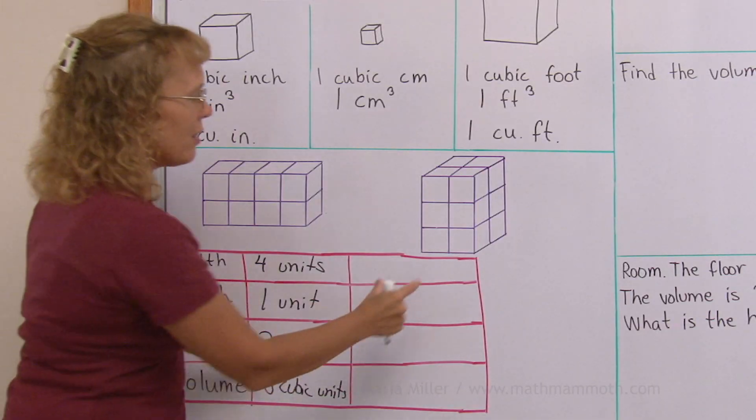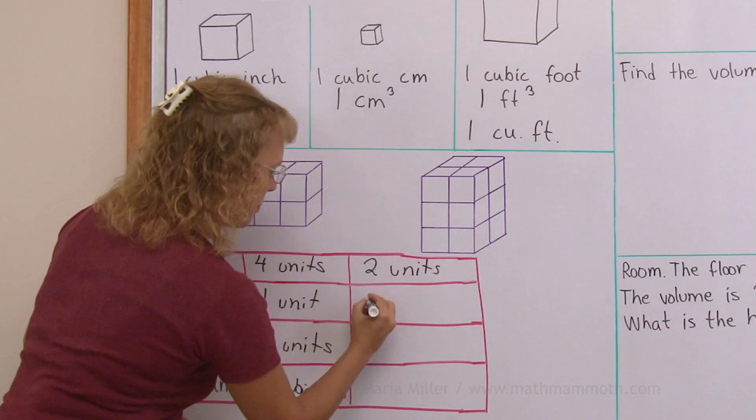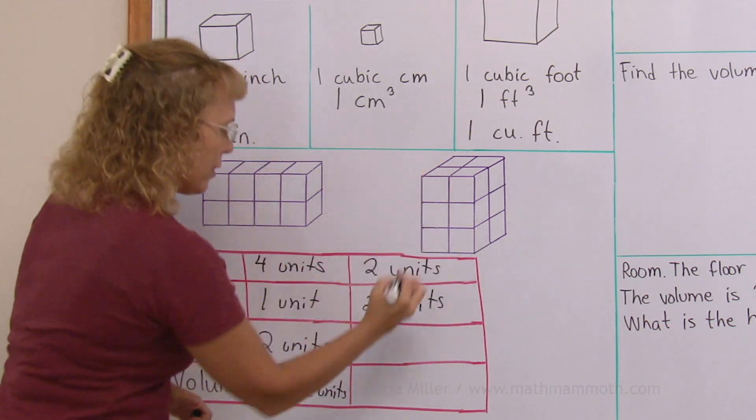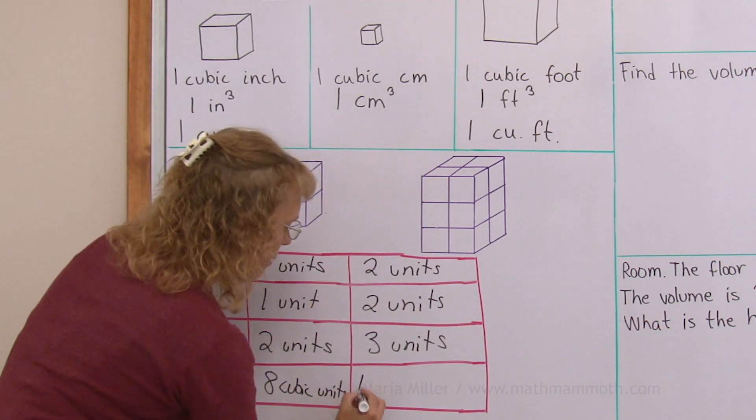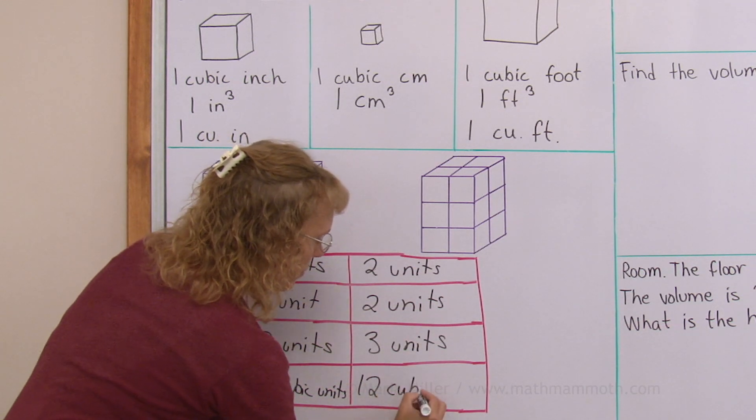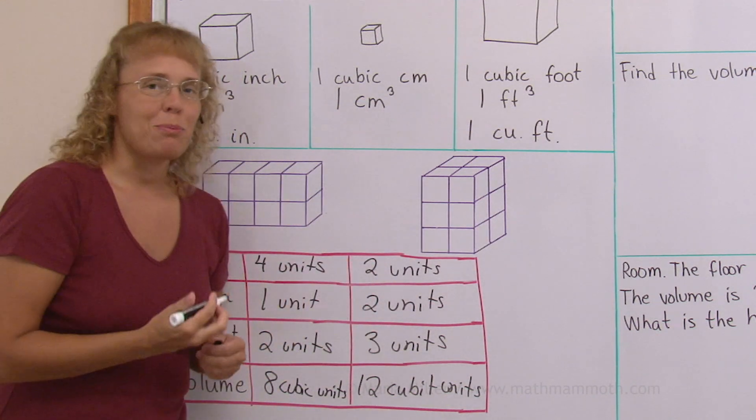The width here is two units. Then the depth is two also, two units. And the height is three units. You can multiply these and get 12 cubic units. 12 cubic units. 12 little cubes stacked to form this figure, this rectangular prism.